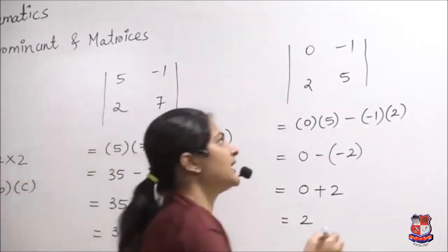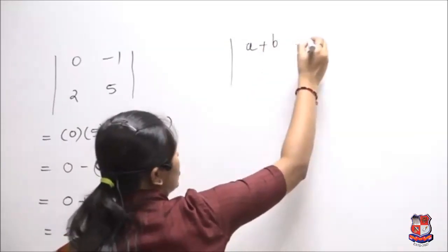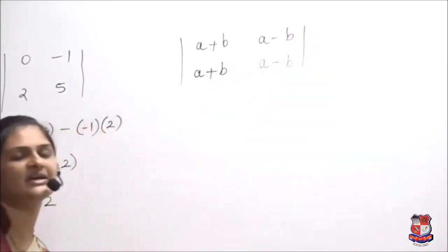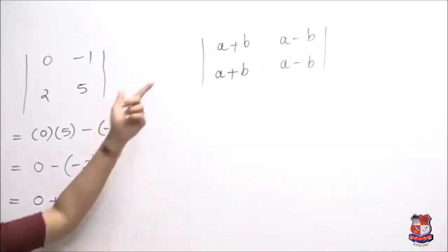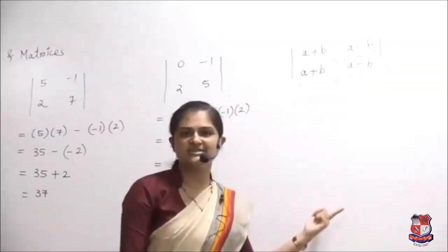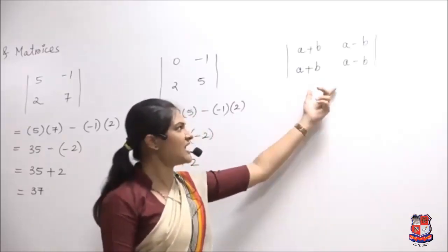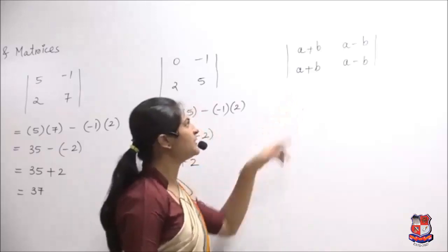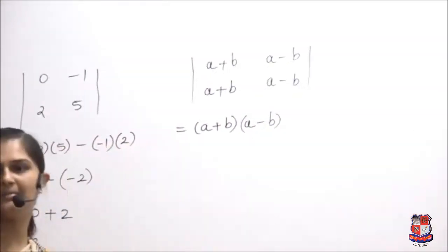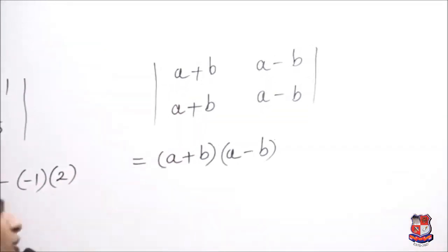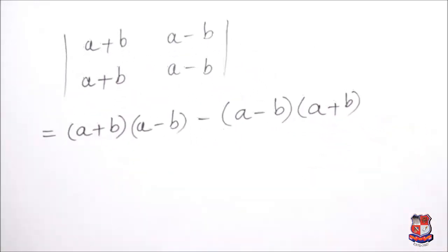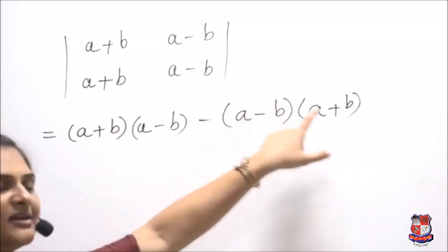Now let's take an example with variables: a+b, a-b, a+b, a-b. For this variable type example, we need to find the determinant value. Here we have variable terms instead of numeric terms, but we follow the same formula. First element a+b multiplied by fourth element a-b. Then formula says minus, so second and third element multiplication. First and fourth element multiplication minus second and third element multiplication.